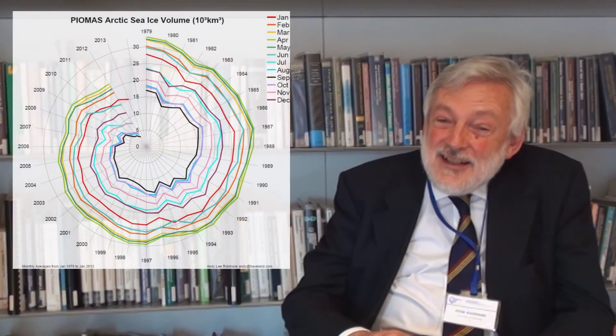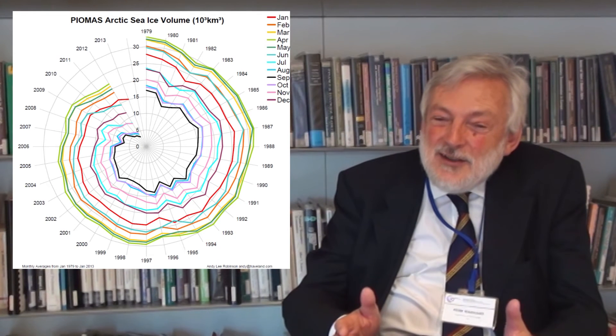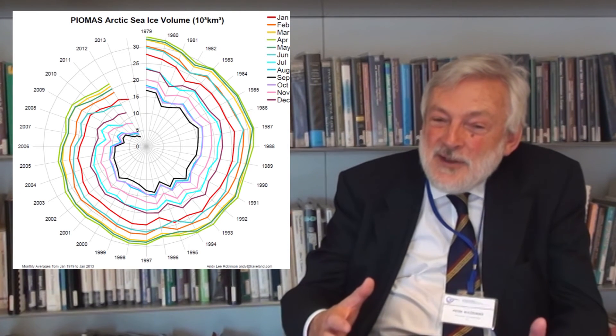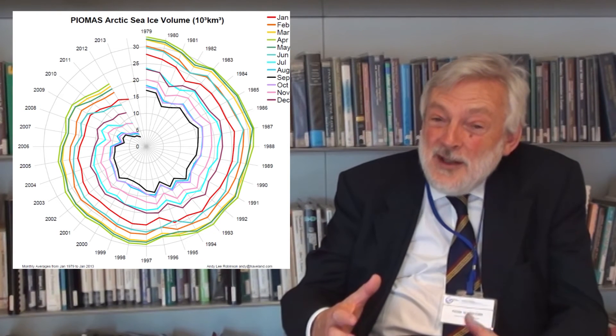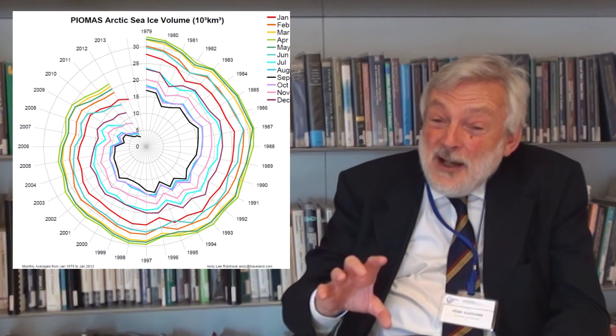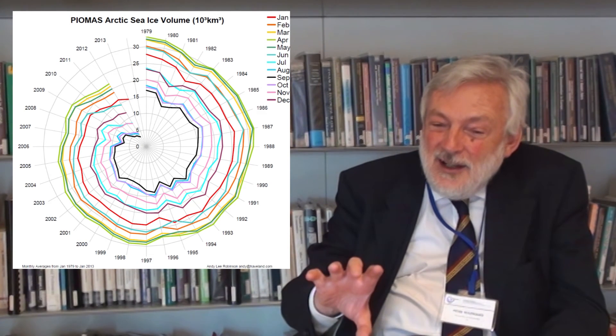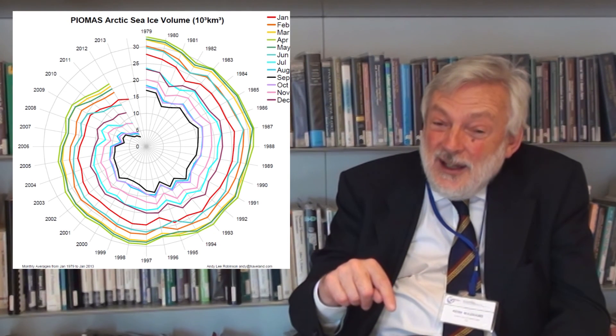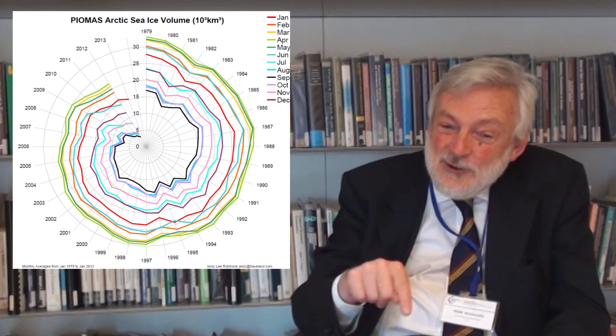The Arctic Death Spiral is produced by working out the volume of ice in the Arctic in each month of the year — that is the area we get from satellites multiplied by the thickness we get from submarines. So we have the volume of ice in the Arctic for each month of each year going back to the 1970s. If there were no change, everything would stay at the same distance from the centre — the same amount of ice in the same month each year. But in fact we find that each year there is less ice in a given month, and so it spirals in towards the centre.